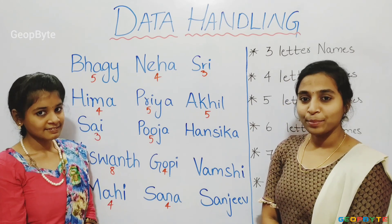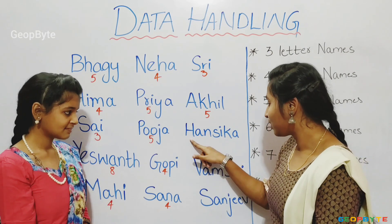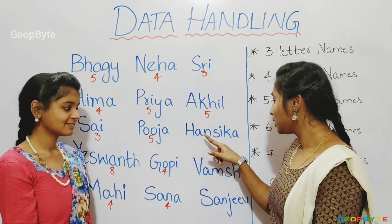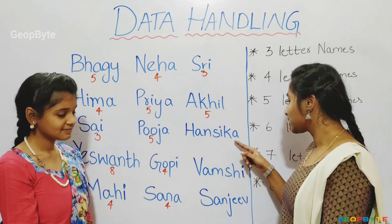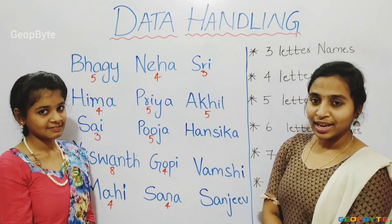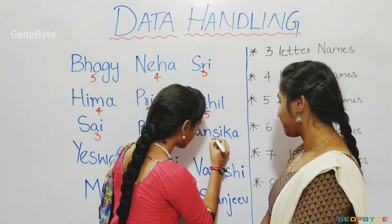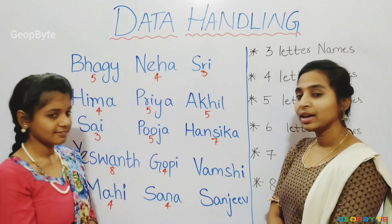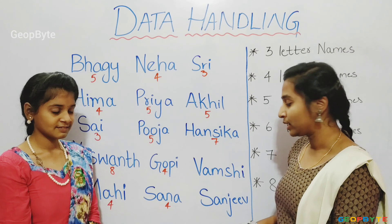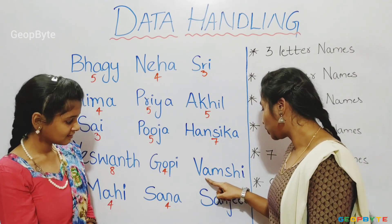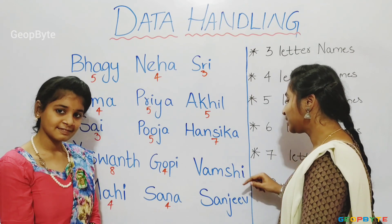Let us count how many letters are there in the name Hansika. One, two, three, four, five, six, seven. There are seven letters in the name Hansika. Let us count how many letters are there in the name Wamshi. One, two, three, four, five, six.